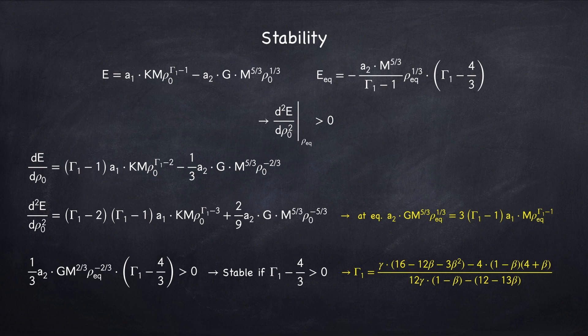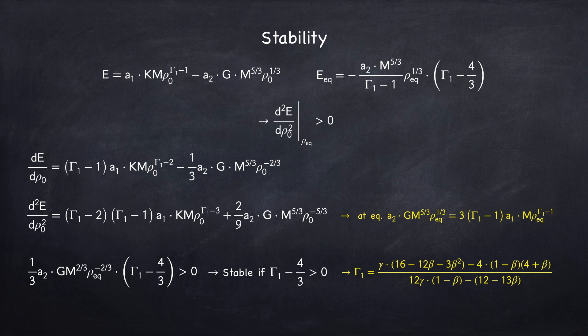Recall that in Stellar Physics 2c we found what gamma1 is, where beta is the fractional gas pressure — the gas pressure divided by the total pressure — and little gamma is the adiabatic index for a Maxwell-Boltzmann gas, so when beta equals one. So if beta equals one, gamma1 will equal little gamma. And if beta equals zero — which is 100% radiation pressure — gamma1 is 4/3, and the star will have a total energy of zero and be on the brink of instability. This should make sense intuitively, because an energy of zero means it takes zero energy to blow the star out to infinity.